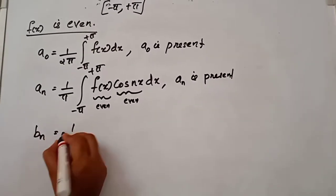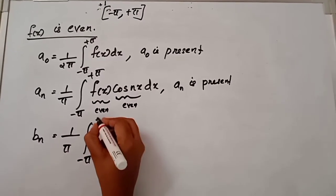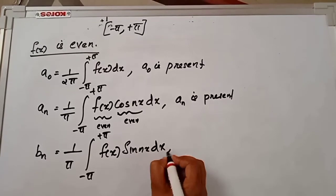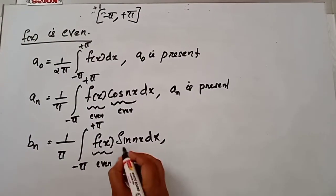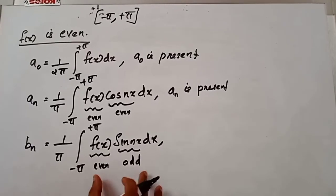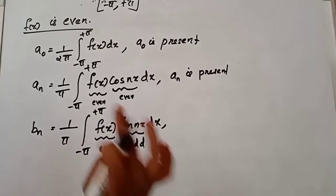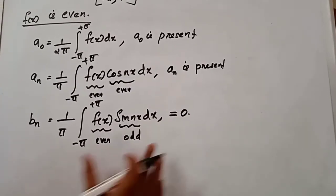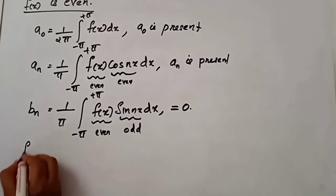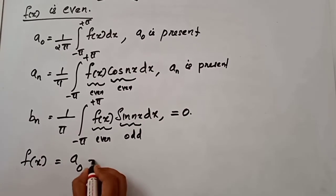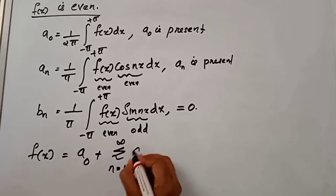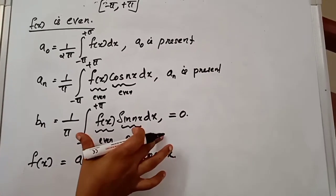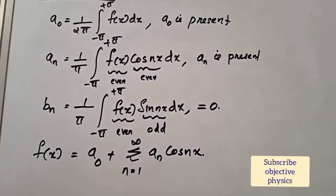And bn equals 1 by pi integral from minus pi to plus pi of f(x) sin(nx) dx. If f(x) is even, then f(x) sin(nx) is an odd function — even times odd is odd — so this integral value is 0, therefore bn equals 0. Therefore, the Fourier series expansion of an even function is f(x) equals a0 plus sigma n equals 1 to infinity of an cos(nx). The sin(nx) term is absent.